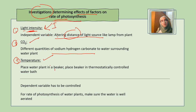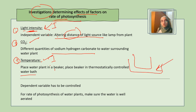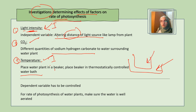For temperature investigations, place the aquatic plant beaker in a thermostatically controlled water bath and change the temperatures; use at least five different temperatures. Also, when using an aquatic plant, the water must be well aerated — you must bubble air into the water — so that dissolved gases don't interfere with and invalidate the experiment.